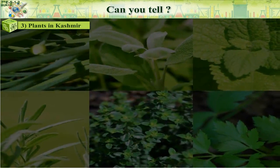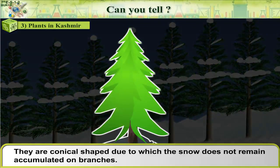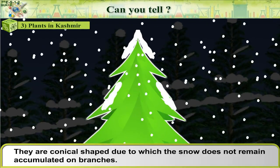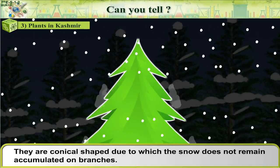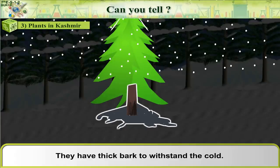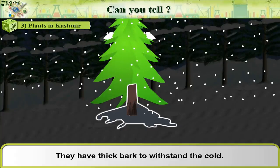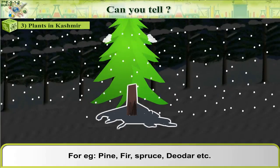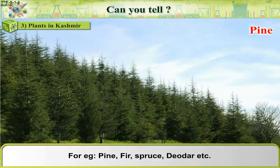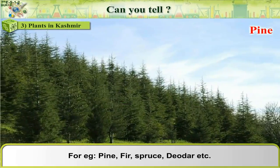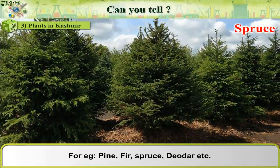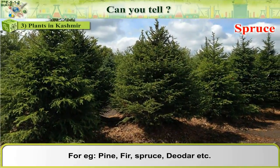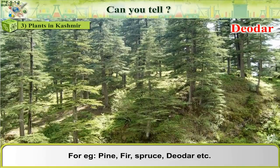Plants in Kashmir: They are conical shaped, due to which the snow does not remain accumulated on branches. They have thick bark to withstand the cold. For example, pine, fir, spruce, deodar, etc.